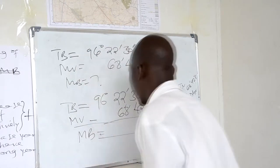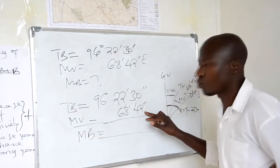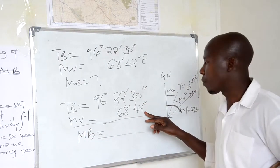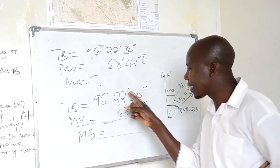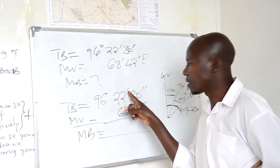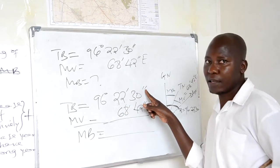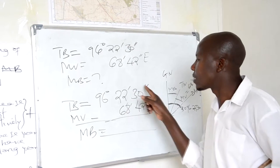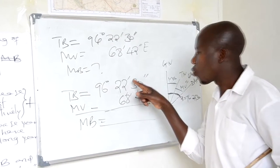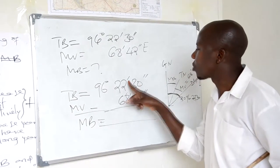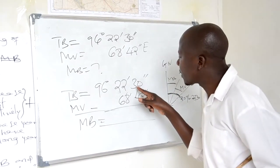You have to take 30 minutes minus 42 — it will be impossible to subtract. Therefore, you have to borrow 1 minute, which will be 60 seconds. 1 minute is equal to 60 seconds. So 60 seconds plus 30 gives us 90.